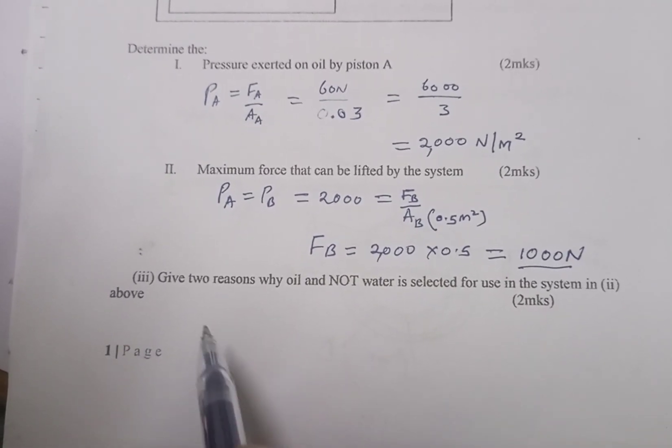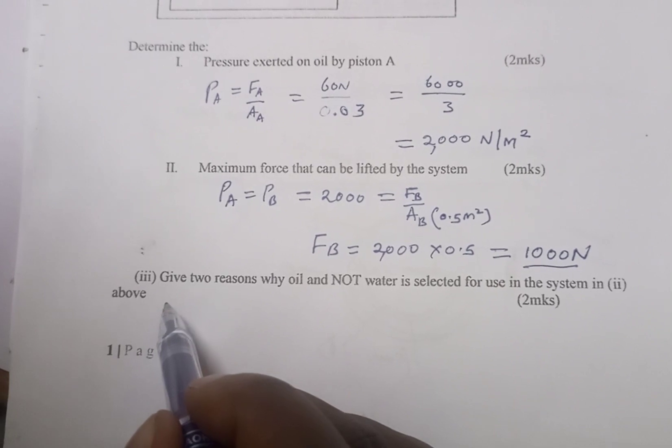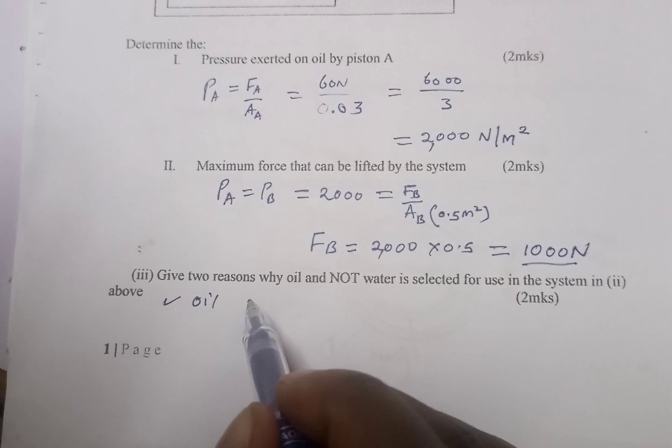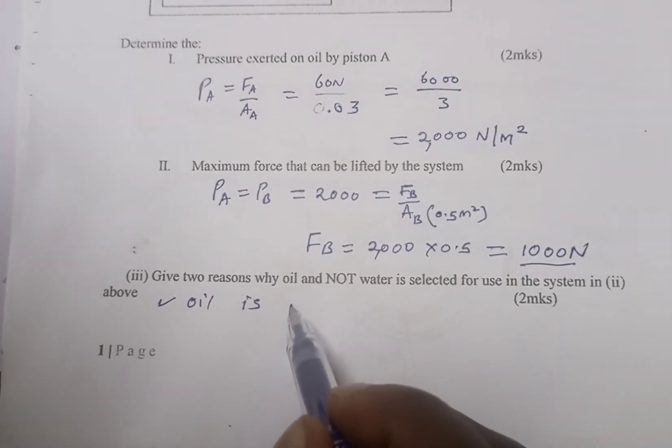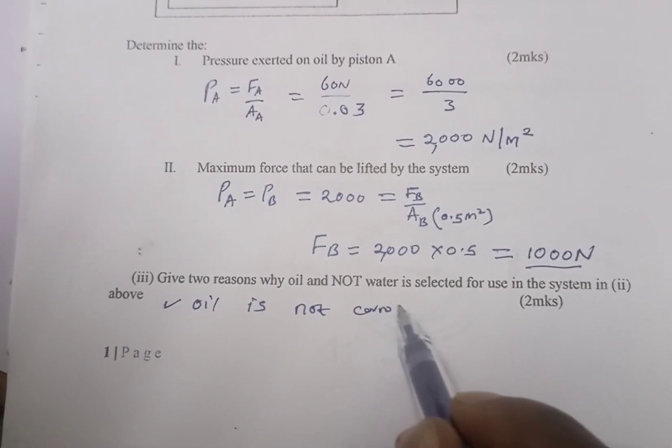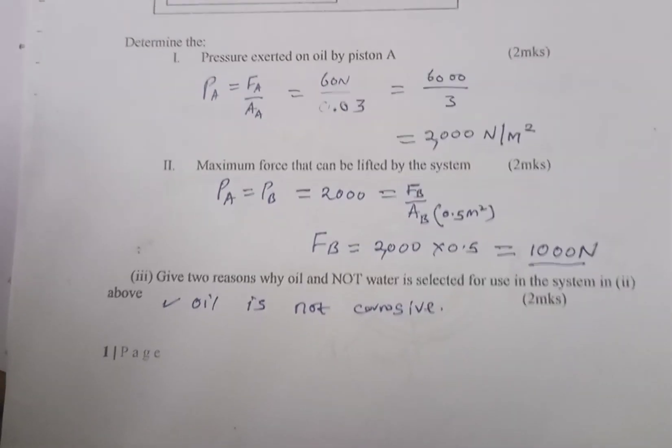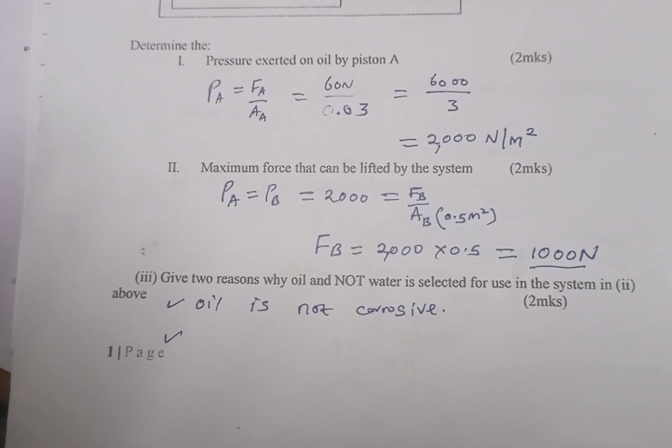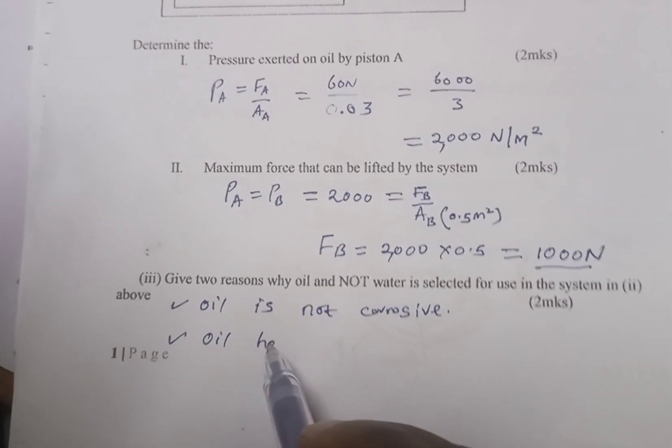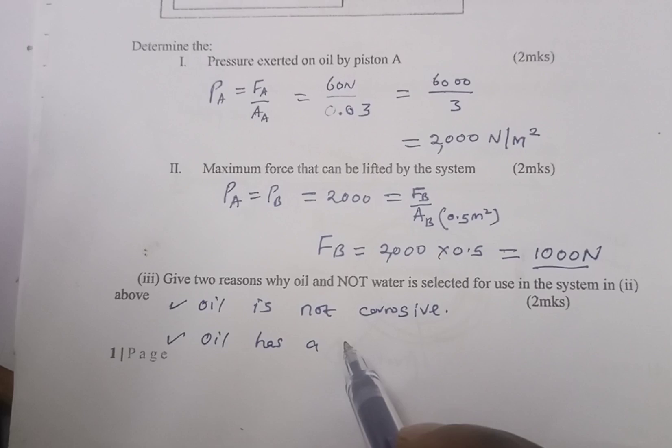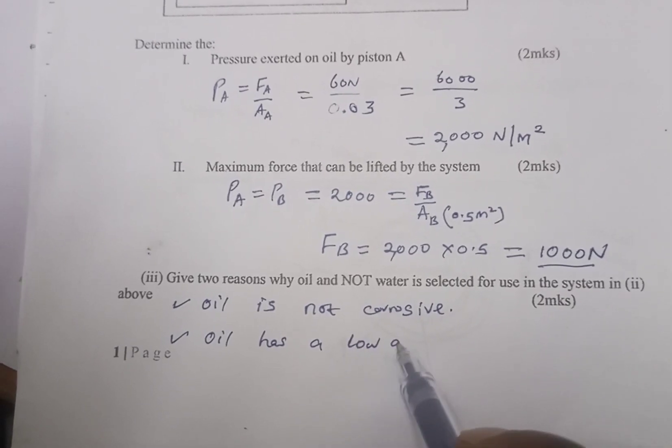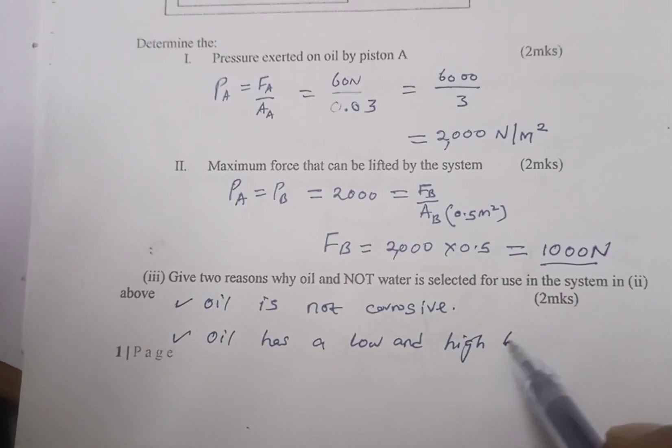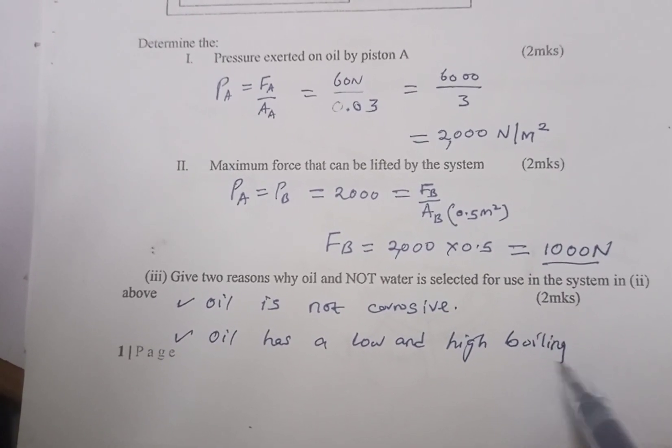Two reasons why oil and not water is selected for use in the system. One reason: the oil has a low melting point and a high boiling point. And oil is not corrosive, that is another point.